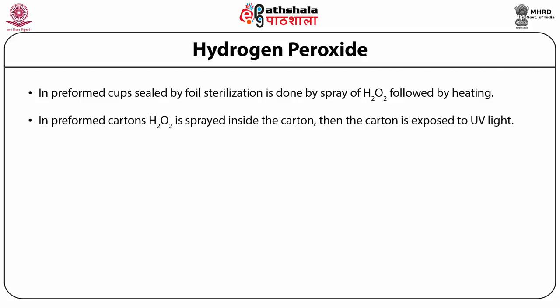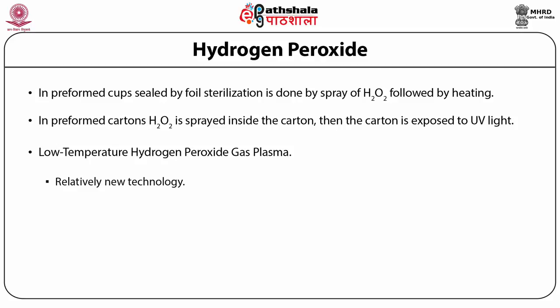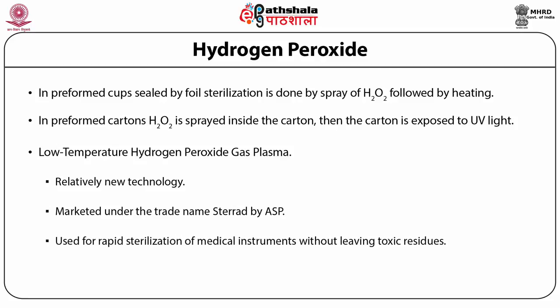Another system which can utilize preformed cartons sprays a low concentration hydrogen peroxide solution on the inside of the carton. This sprayed carton then passes under a UV light source which acts synergistically with the hydrogen peroxide in destroying microorganisms. Low temperature hydrogen peroxide gas plasma (LTHPGP) sterilization is a relatively new technology marketed under the trade name STERRAD by ASP, used mainly for rapid sterilization of medical instruments without leaving toxic residues.